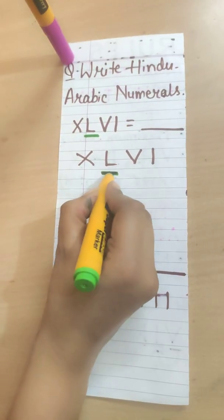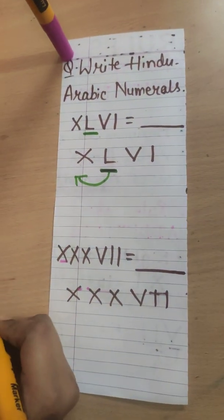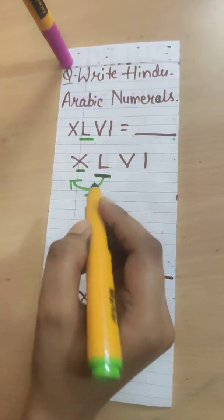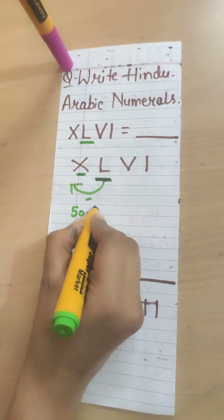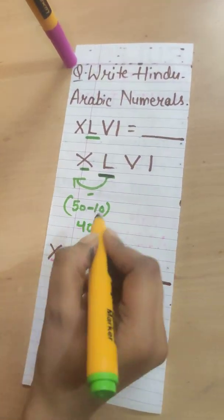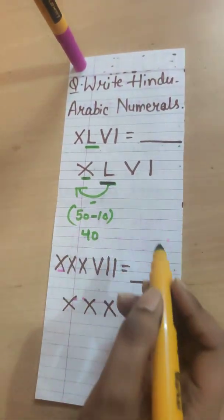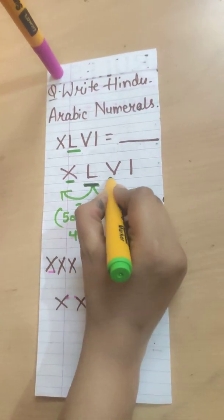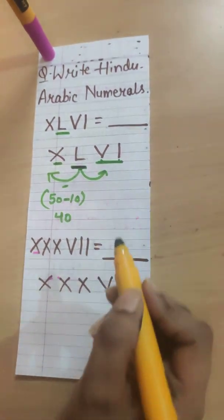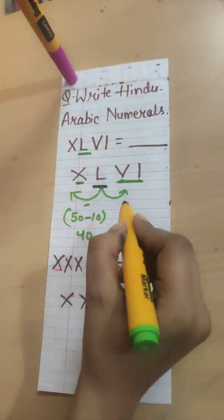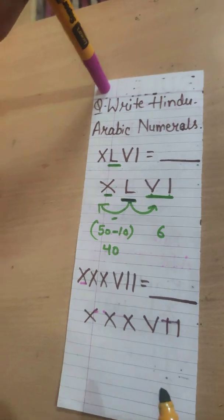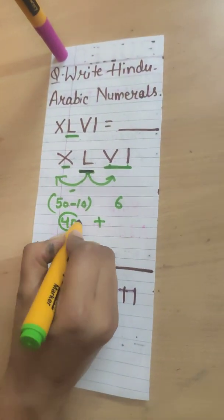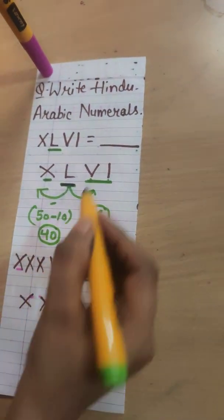First, we will always move towards our left side, means we will first subtract. It's 50 and it's 10. 50 minus 10 will be 40. When we solved our XL, we got to know it's 40. Now, after this, we will move to our right side. It is VI. VI means 5 plus 1. It is 6. So it will be finally our answer 40 plus 6. 46.